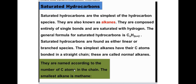They are named according to the number of carbon atoms in the chain, and the smallest saturated hydrocarbon is methane. In methane, there are four single covalent bonds, and these single covalent bonds are bonded with hydrogen atoms.